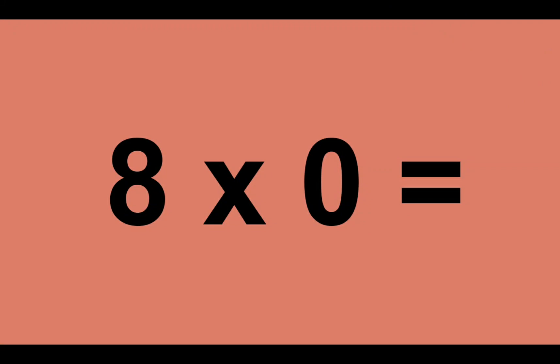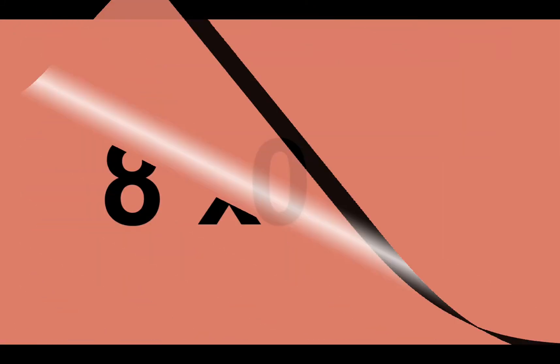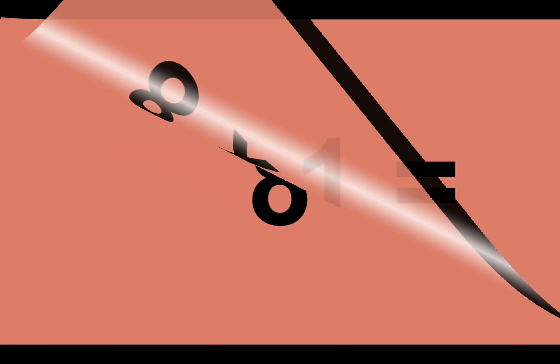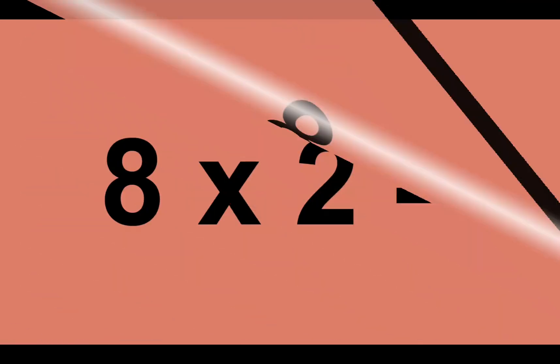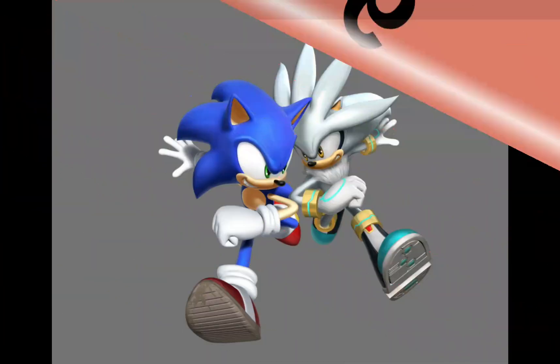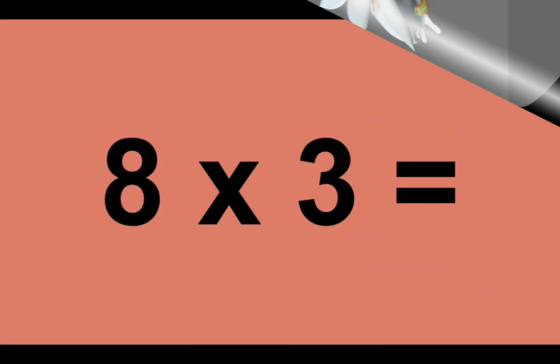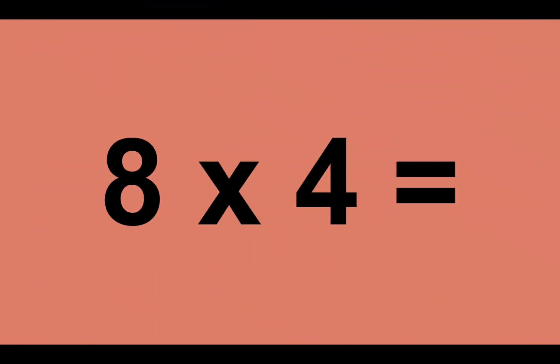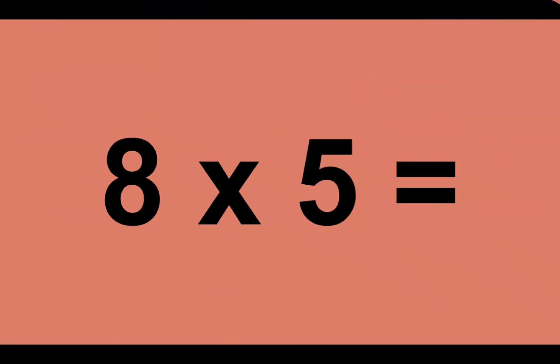Eight times zero equals zero. Eight times one equals eight. Eight times two equals sixteen. Eight times three equals twenty-four. Eight times four equals thirty-two. Eight times five equals forty.